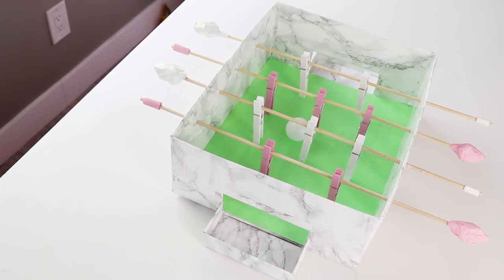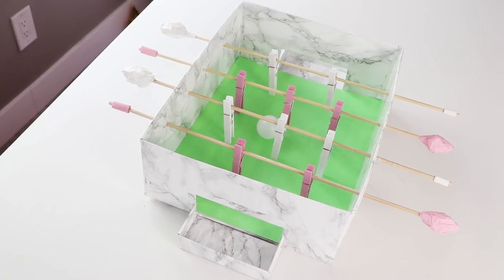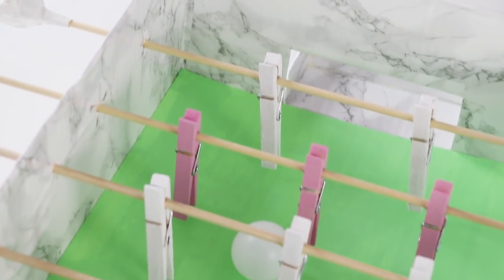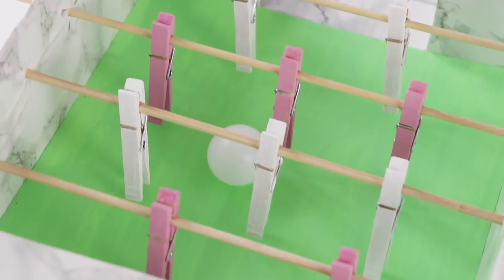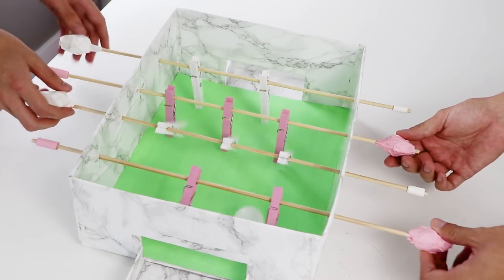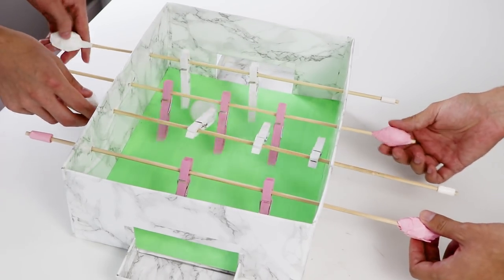And that's it. Once the glue is dry, you've got a tabletop foosball game that you made out of a cardboard box. Use a ping pong ball as the soccer ball, and it's actually super fun.